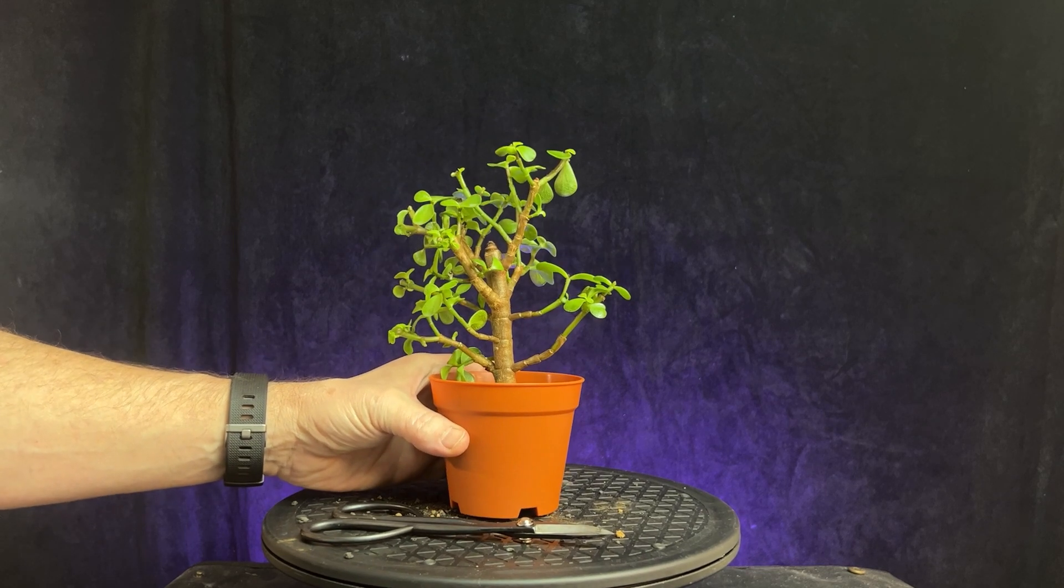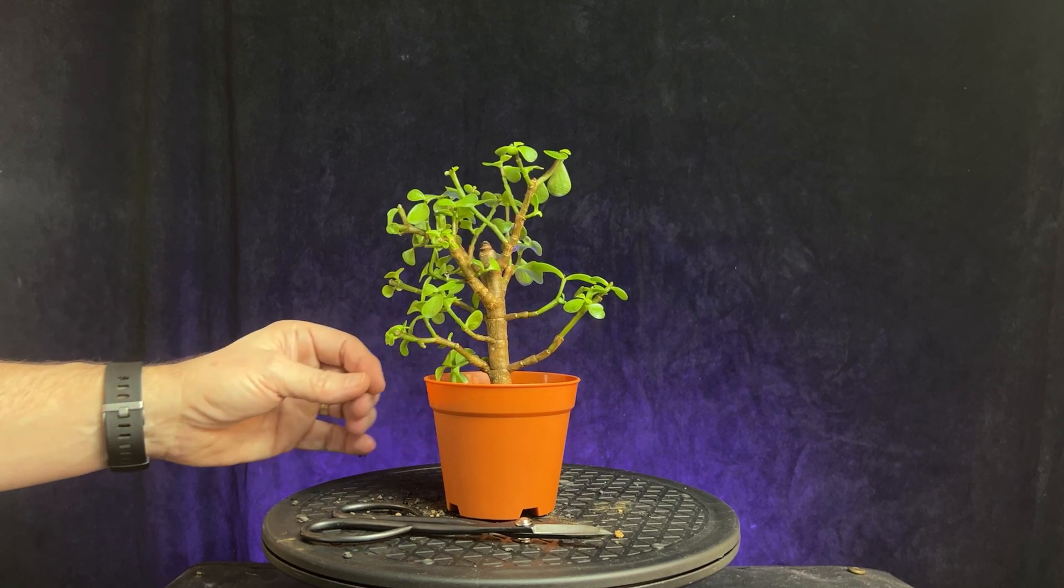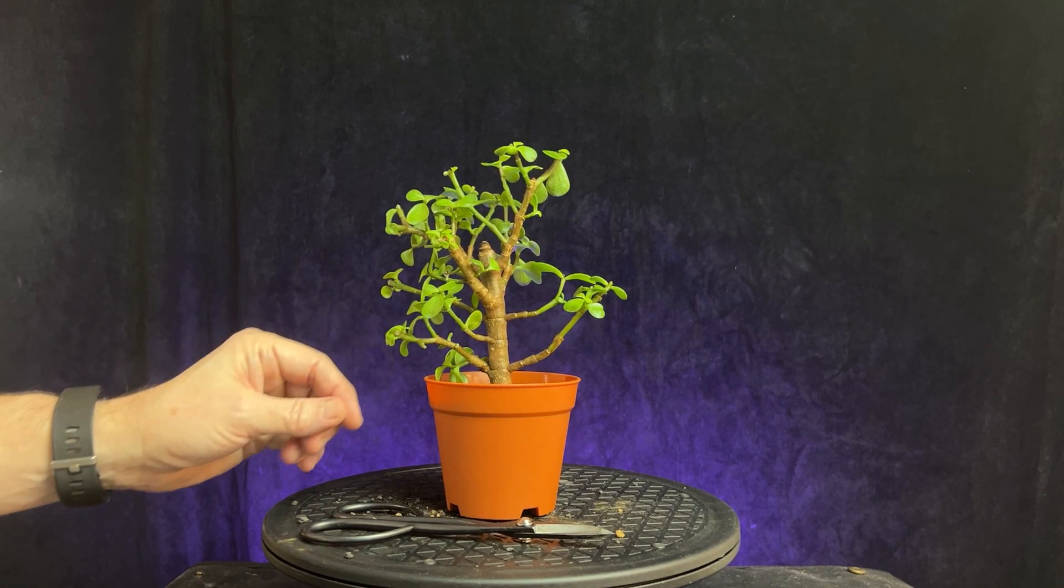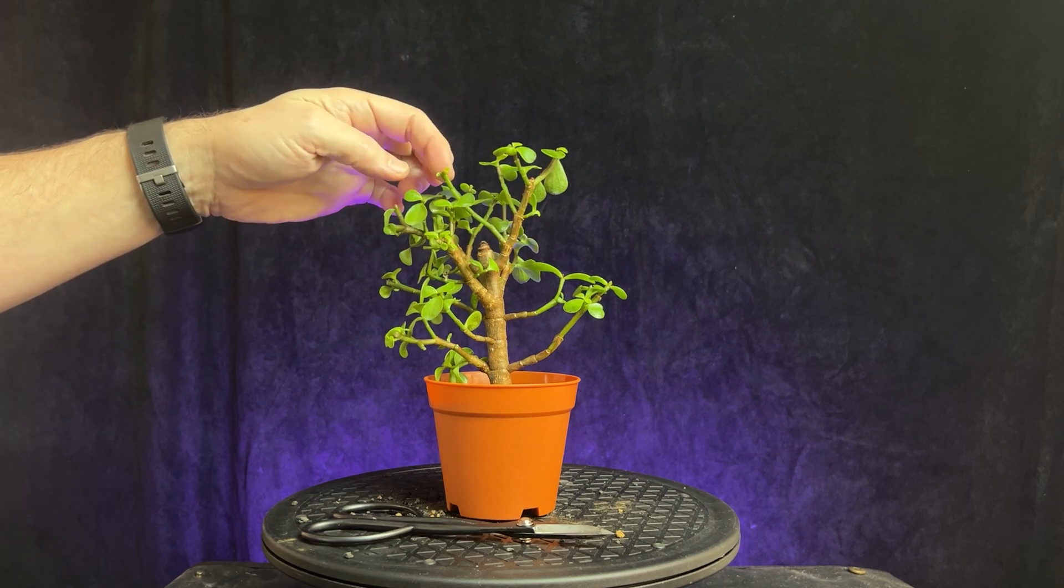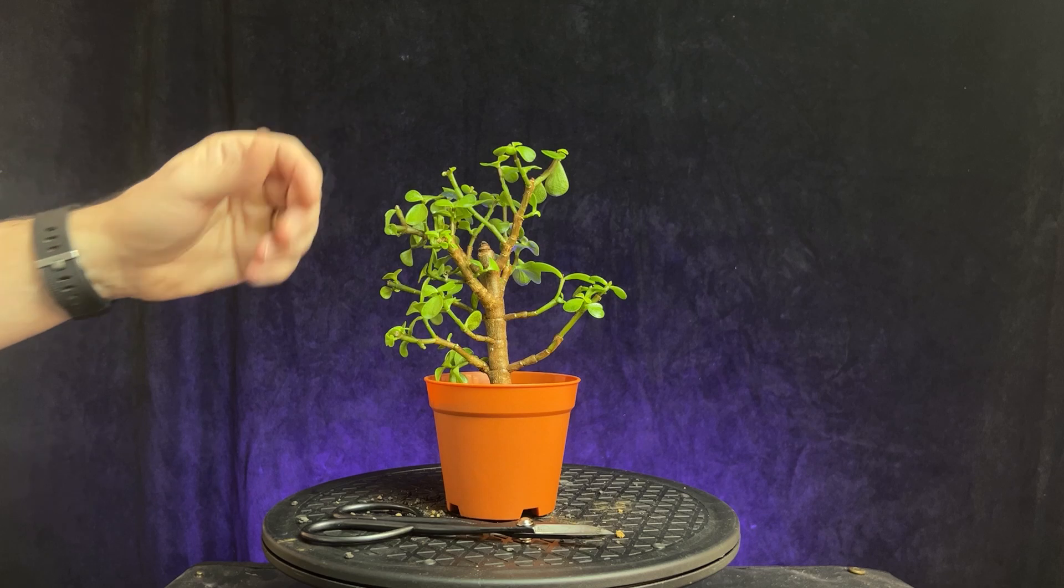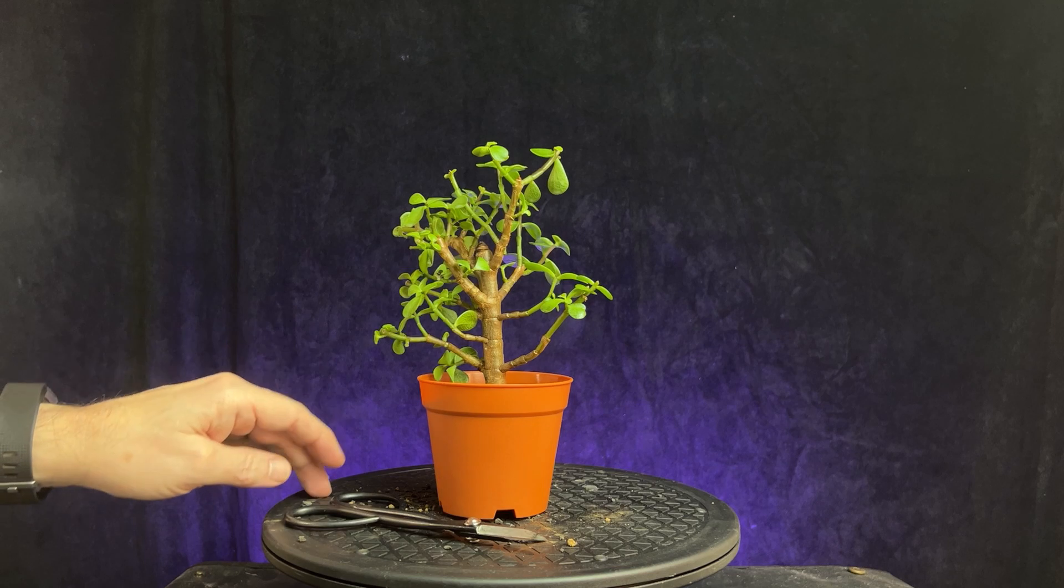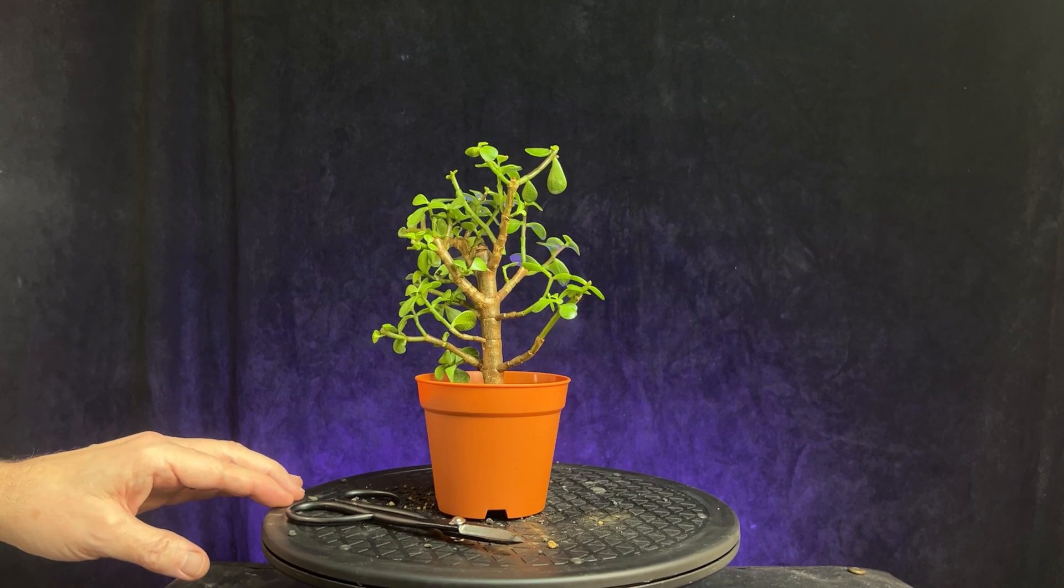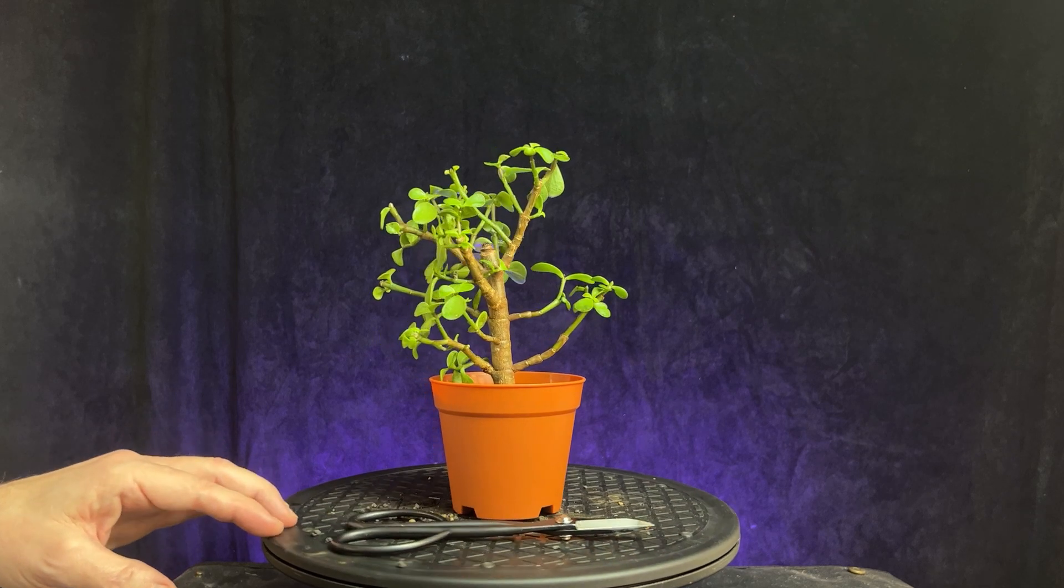So I think I don't think we'll do any trimming on this guy today. We'll just let it get established without adding any more stress to it. Let that get established. And once I start seeing new growth, there's some new growth here just since it's been in the water. But once I start seeing new growth, then I might go in and trim off some of the branches. We've got some bar branches here where they're right across from each other. I'll start trimming some of those off, make some branch selection, and kind of get it on its way to being a bonsai tree.